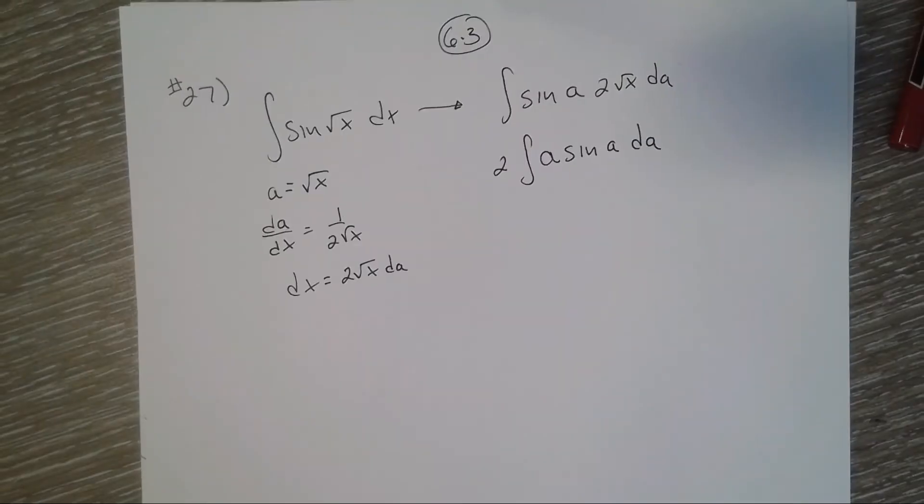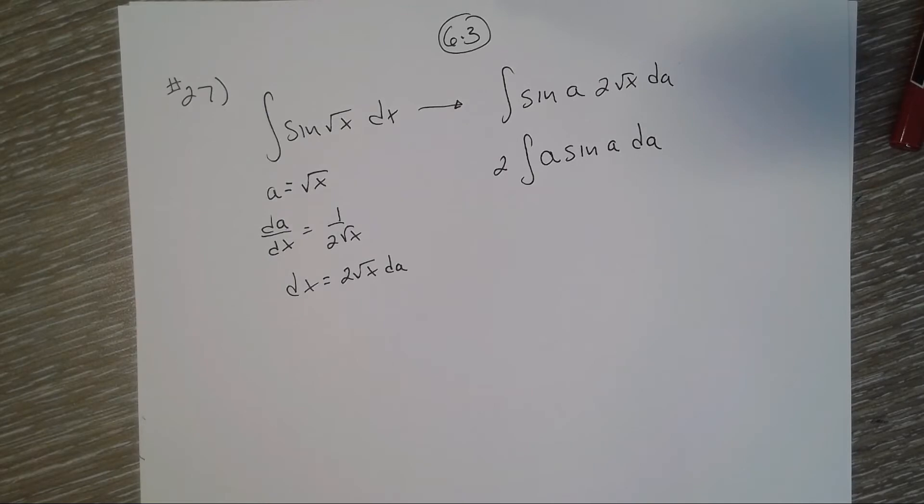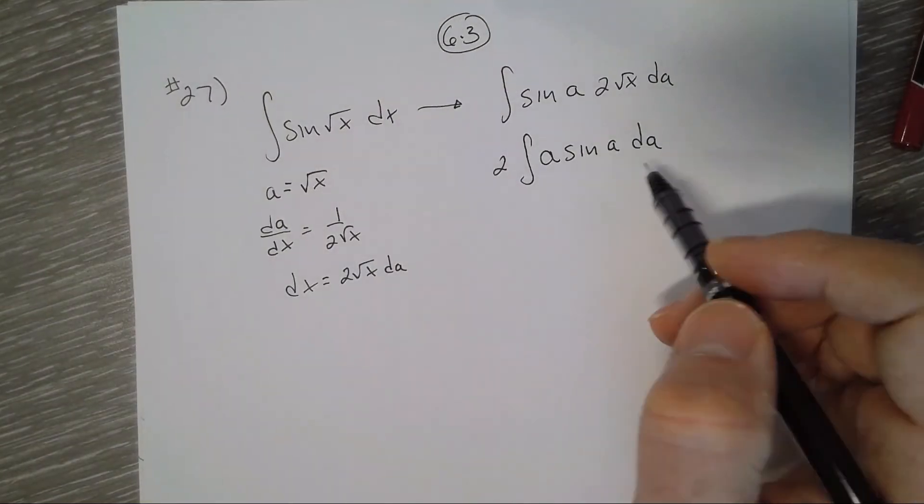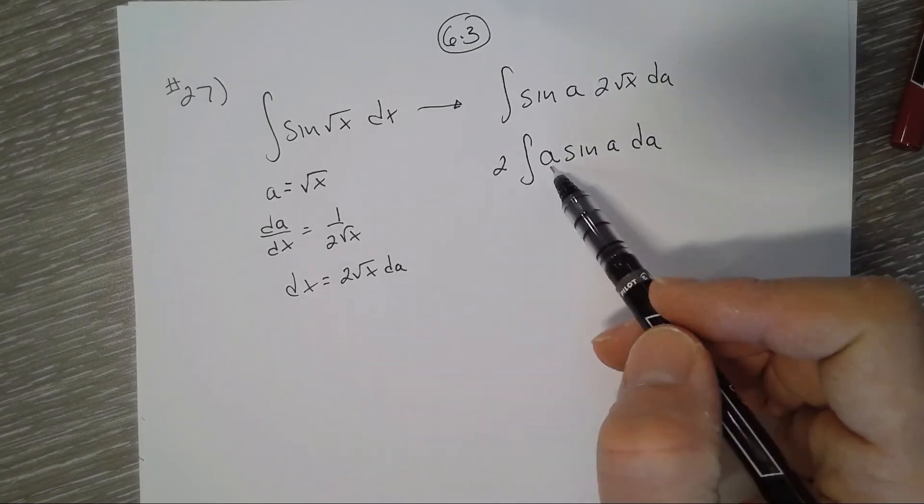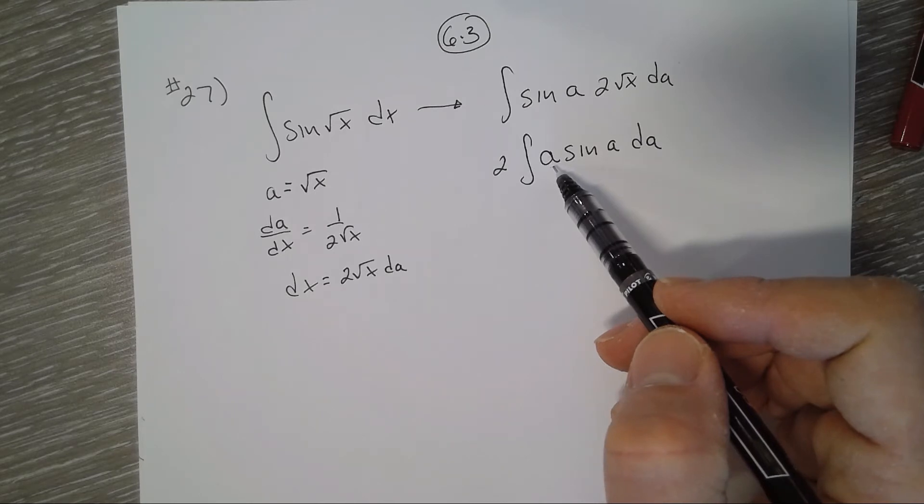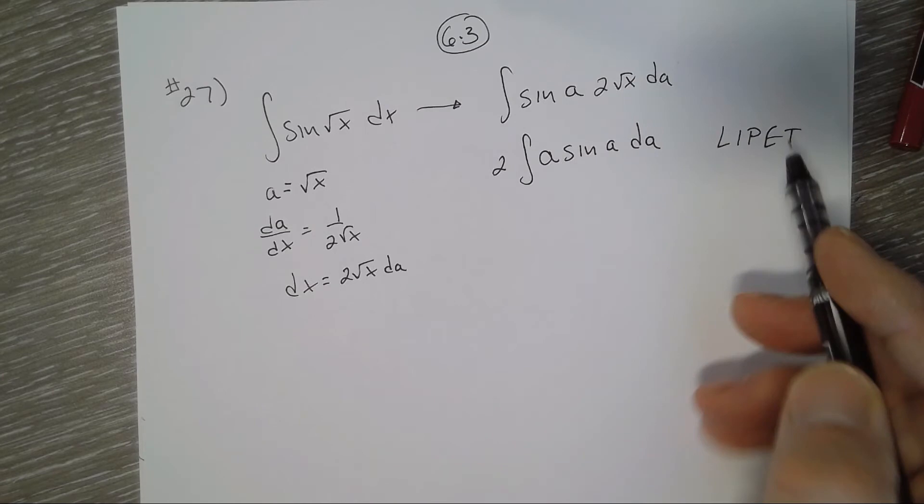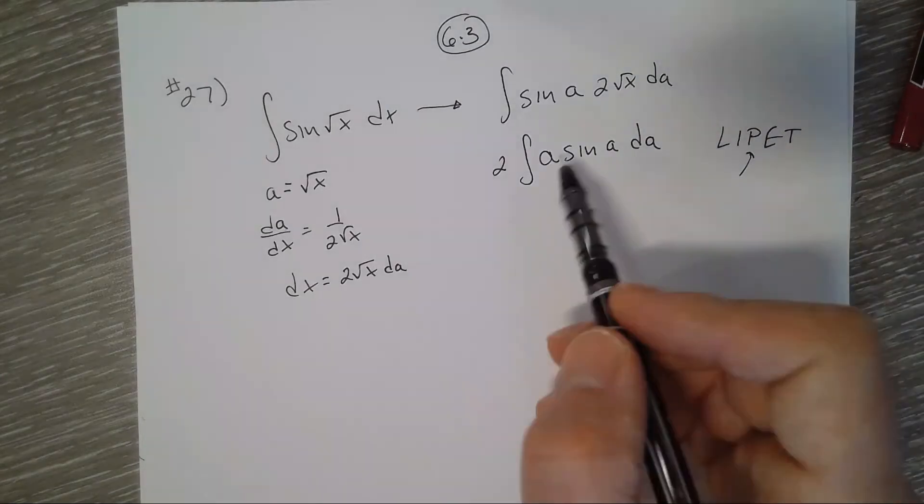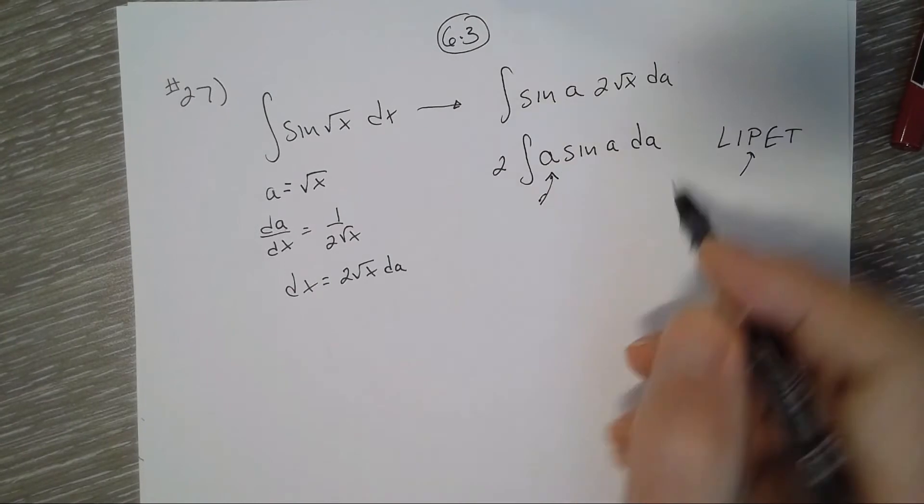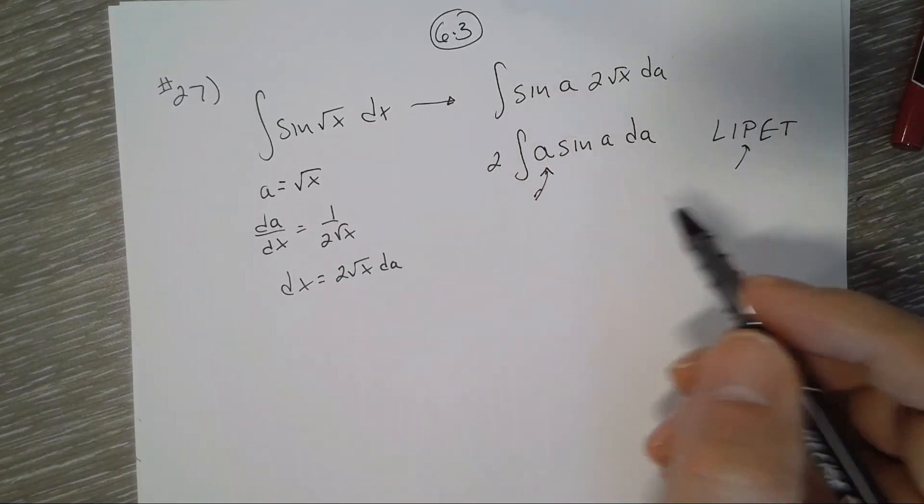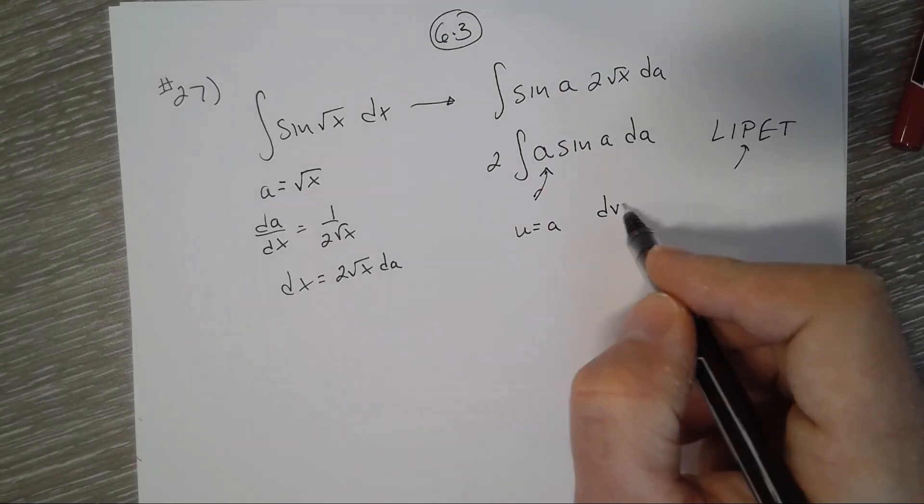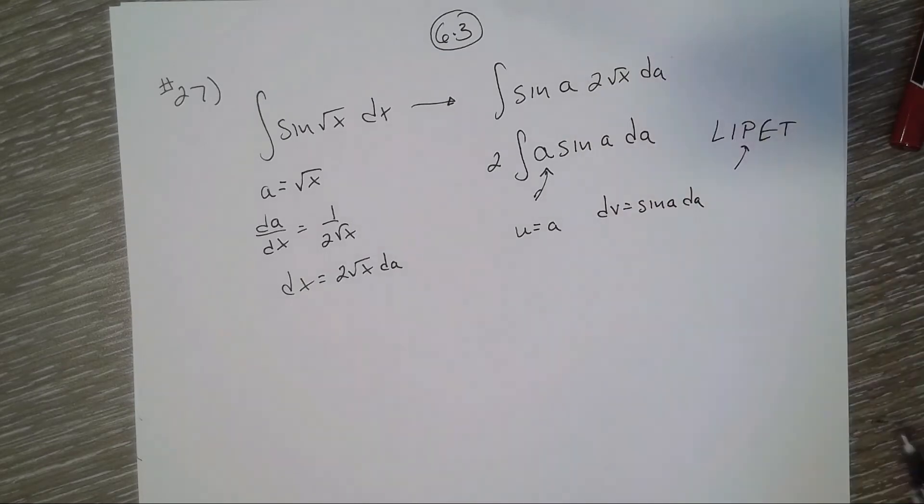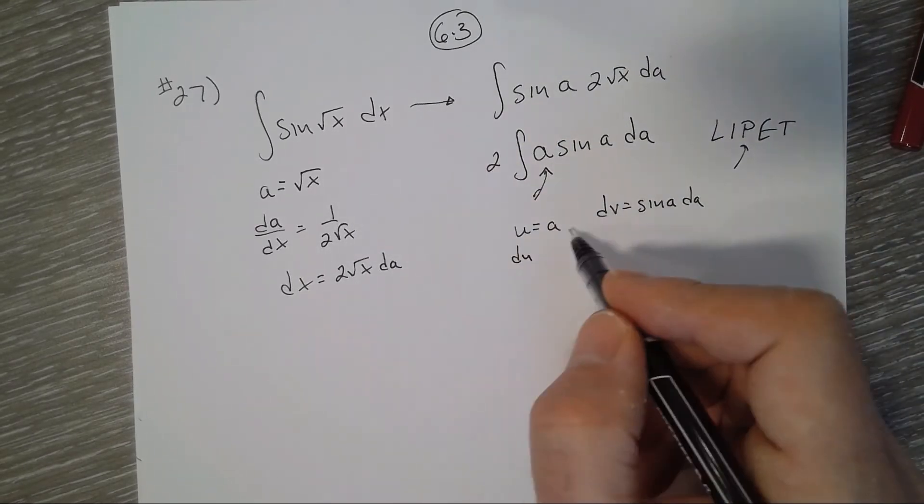So it's 2 a sine a da, which is set up for integration by parts. I see that there is a polynomial right there, and polynomial would be our u. Trig is further down in the word LIPET, so that's our dv. I'm going to leave this 2 out of it and try not to forget about it later. So our u is a, and our dv is everything else. du/da equals 1, so du equals da, and the antiderivative of sine is negative cosine.